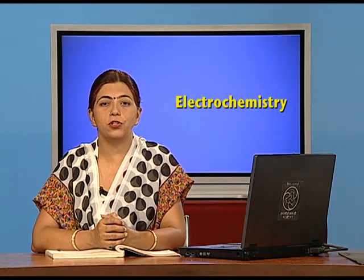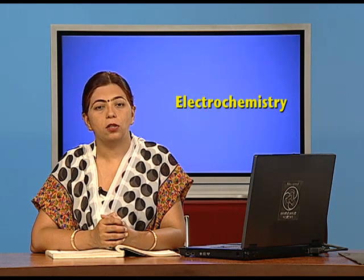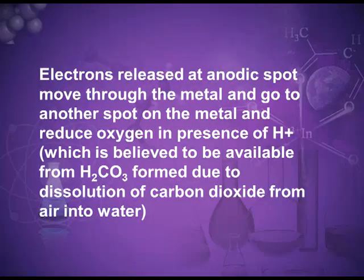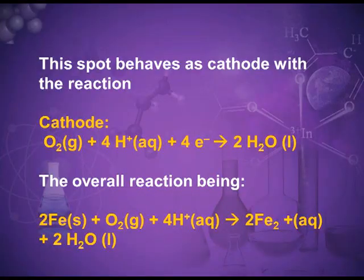These electrons move through the article and reduce oxygen at another point in the presence of hydrogen ions. The hydrogen ions come from atmospheric carbon dioxide, which in the presence of moisture forms carbonic acid (H₂CO₃). This carbonic acid provides hydrogen ions. Oxygen, in the presence of hydrogen ions, accepts electrons, gets reduced, and forms water — all taking place at the cathode. Oxidation occurs at the anode and reduction at the cathode.